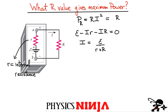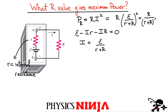Now let's substitute that current into the power expression. We get P = R × EMF² / (r + R)². Grouping terms: the numerator has R times EMF squared, and the denominator is (r + R) squared. That is our expression for the power dissipated by the load. The question now is: which value of R maximizes this?